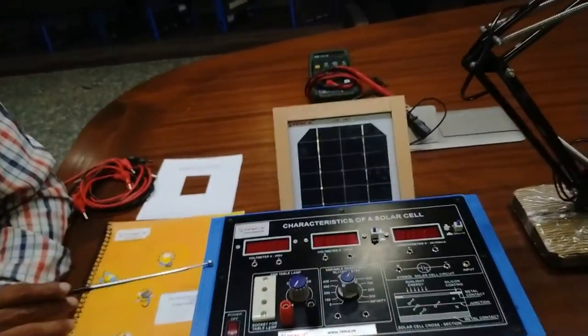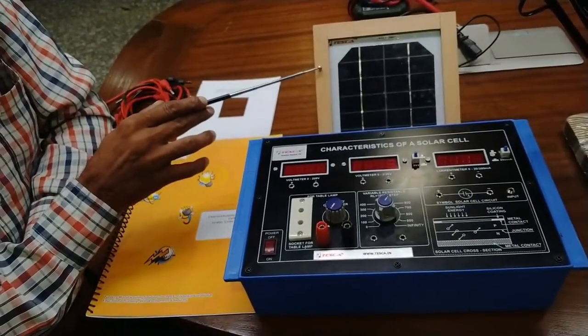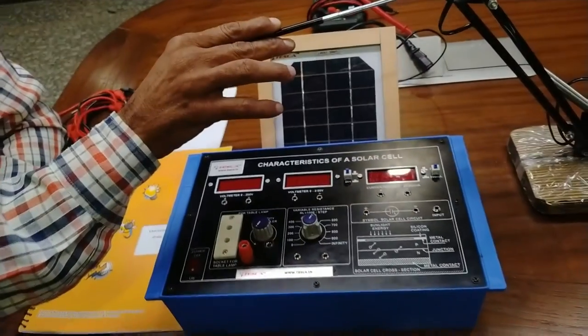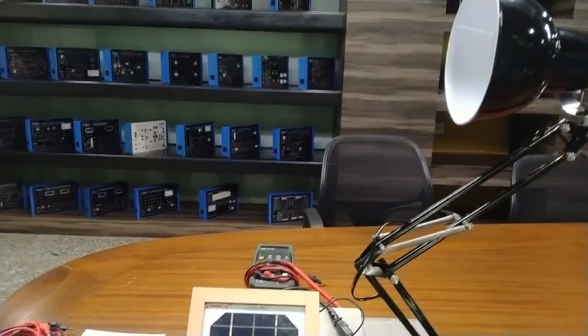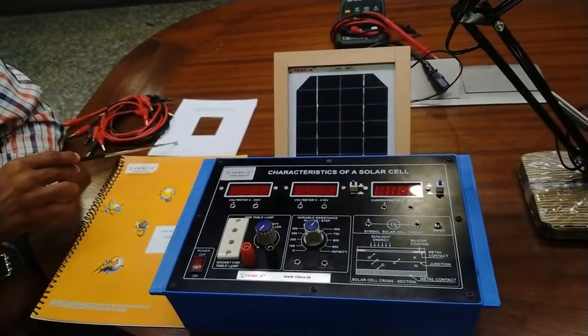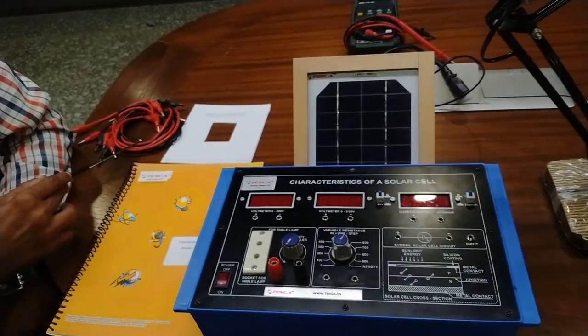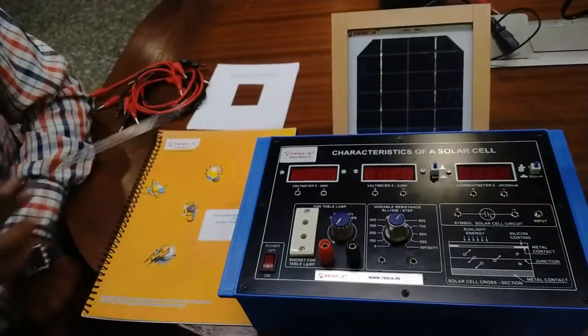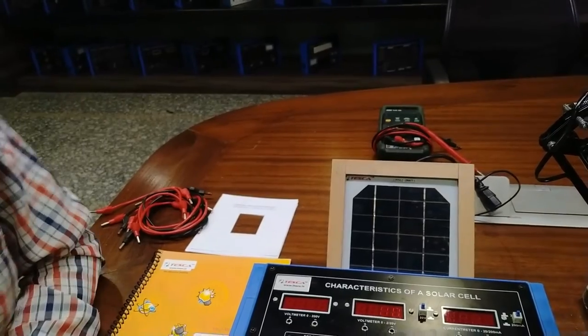This is our solar cell kit. With this, we are providing solar cell, table lamp, operating manual, choppers, patch cords and mesh cords. This is our solar cell kit.